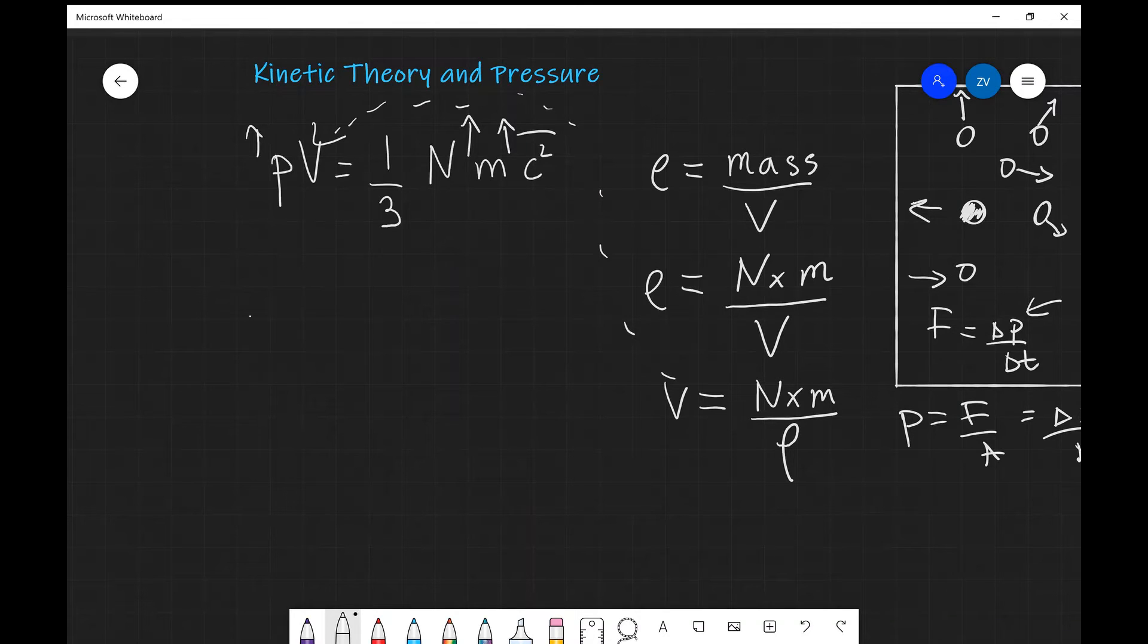So what I'm going to get is a P and rather than V I'm going to write Nm and then I'm going to divide by the density. Please don't confuse this ρ symbol which looks kind of like a curly p with P standing for pressure.